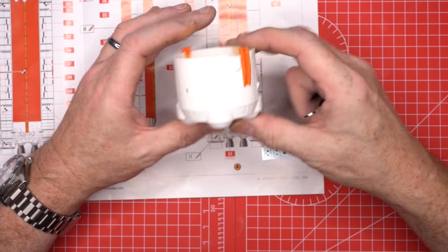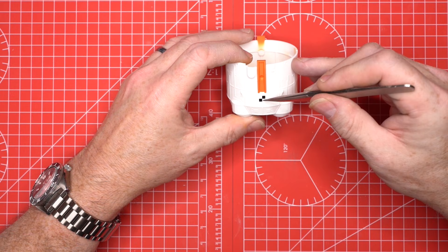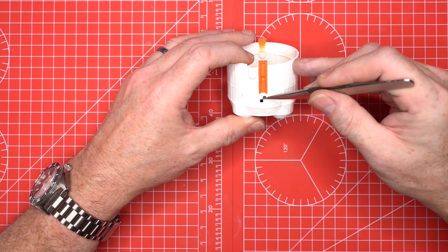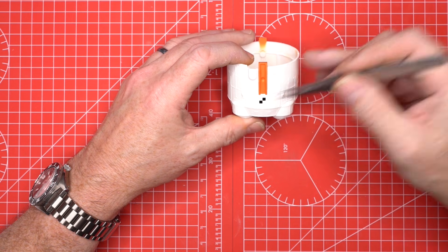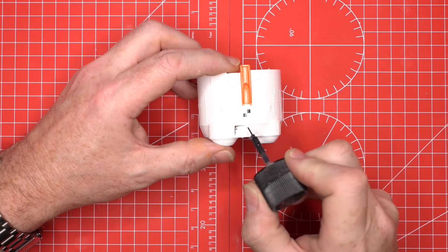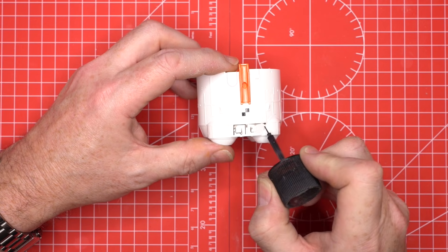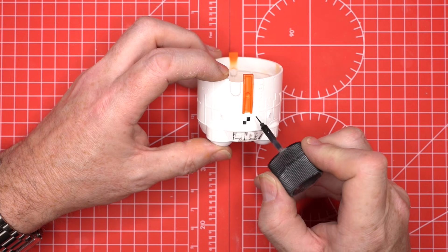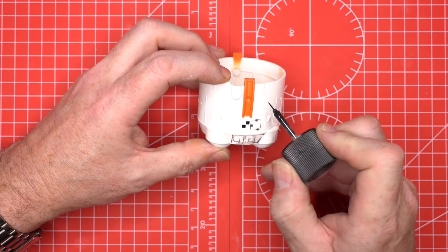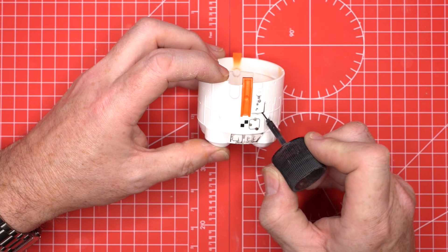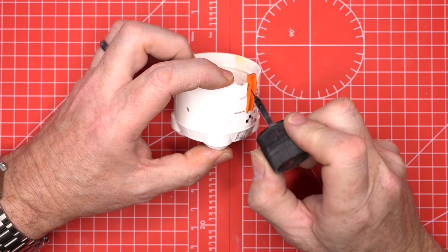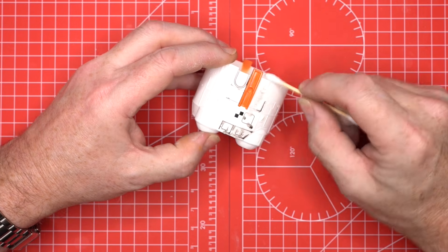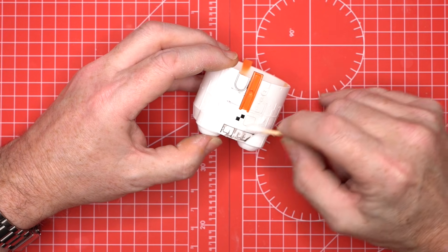We apply the decals for the panel markings, settling them into the molded detail. Then we mask and paint the orange connection points that will join the engine section to the main tank. We add very subtle weathering—a panel wash flows into the recesses and settles into corners, giving the engine genuine depth. We remove the excess with a cotton bud and white spirit, leaving the lines sharper and the texture more complex.